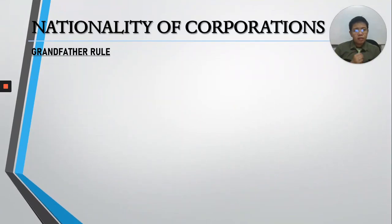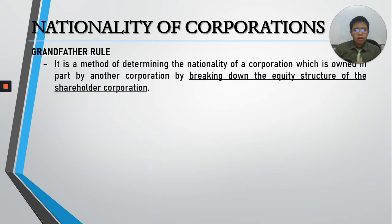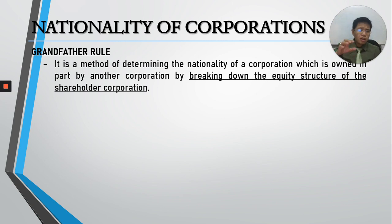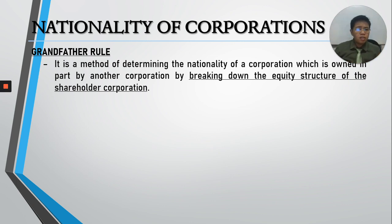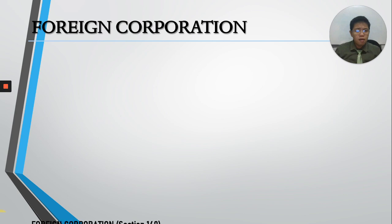Please take note also of the grandfather rule — they always ask this in the board exam. The grandfather rule is a method of determining the nationality of a corporation which is owned in part by another corporation, by breaking down the equity structure of the shareholder corporation. To determine the nationality of the main corporation, the shareholder corporation's equity structure is broken down. Just take note of that — they always ask it in the board exam.